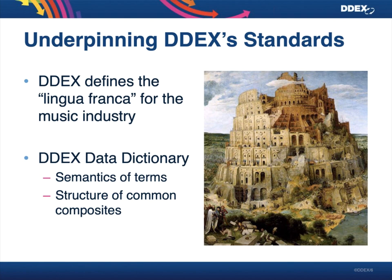The data dictionary contains all of the semantics of all the terms that appear in any of the standard messages, and it contains the structure of common composites. Composites in our language are groups of data points that help describe a particular type of entity, like a sound recording or a musical work. These composites get used multiple times throughout all of the messages and provide a lot of common structure that can be reused regardless of which standard you're implementing.